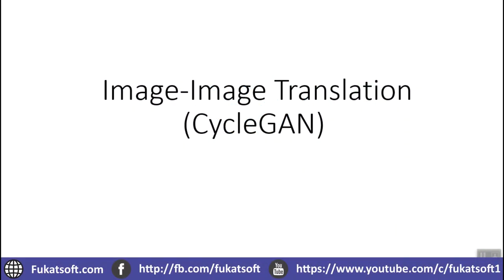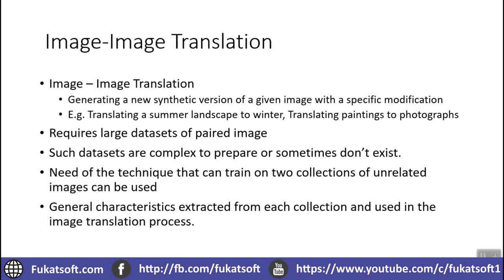Hello, today we will talk about image-to-image translation, specifically CycleGAN. Image-to-image translation is generating a new synthetic version of a given image with a specific modification. An example could be translating an image with a summer landscape to a winter landscape, where there is snow and the flowers are not green. Another example is translating paintings to photographs.